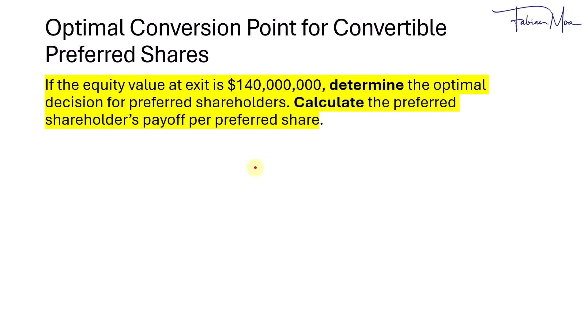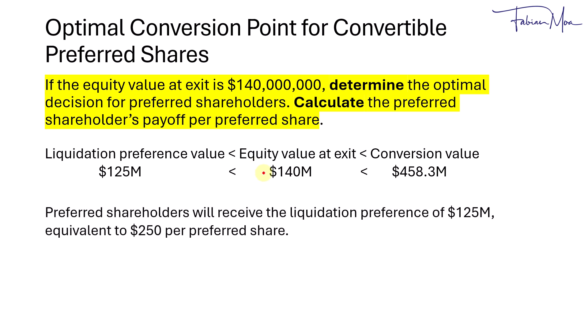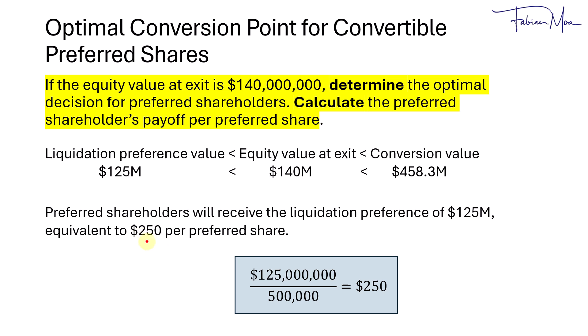In the next scenario, if the equity value at exit is $140 million, we note that the equity value is greater than the liquidation preference value but lower than the conversion value of $458.3 million. So the optimal decision is to receive the liquidation preference value of $125 million, which is equivalent to $250 per preferred share — $125 million divided by 500,000 preferred shares.